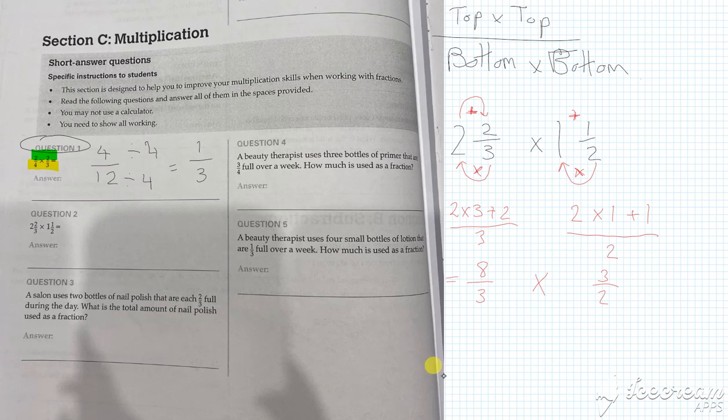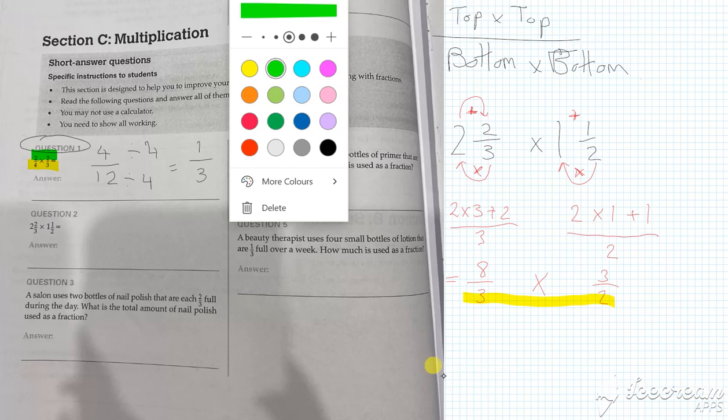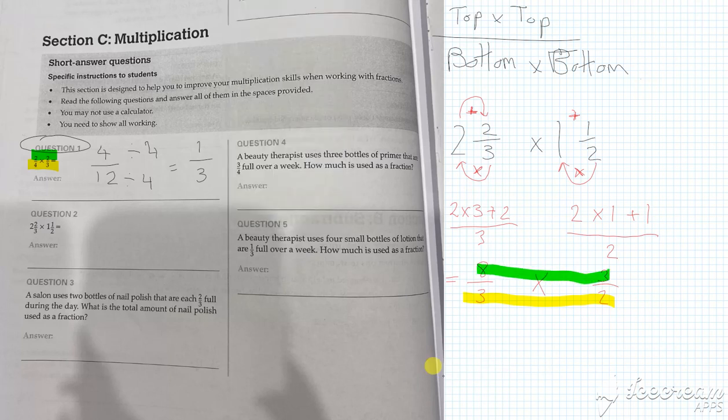And we're times in. Now we can do our top and bottom stuff. So bottom and top. And so we're going to have 8 times 3 is 24, 3 times 2 is 6.